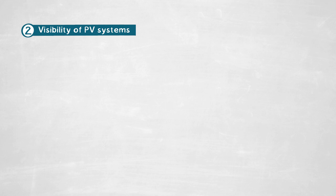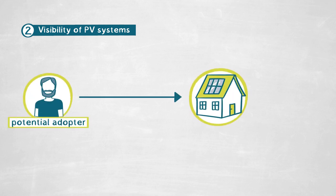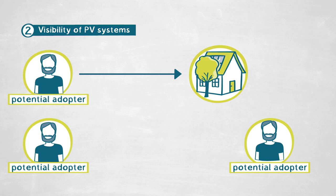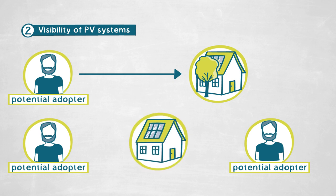What makes a PV system visible? We consider two conditions. The first is simple: if there is an obstacle in the line of sight between a potential adopter and a prior existing PV system, we consider that PV system non-visible. The second condition is more complicated: if the prior existing PV system is on a roof exposed to the south, only potential adopters located to the south can see it, because those located to the north cannot see that particular PV system.